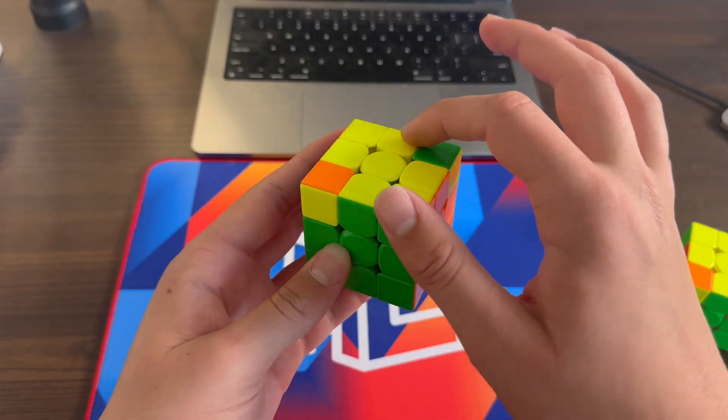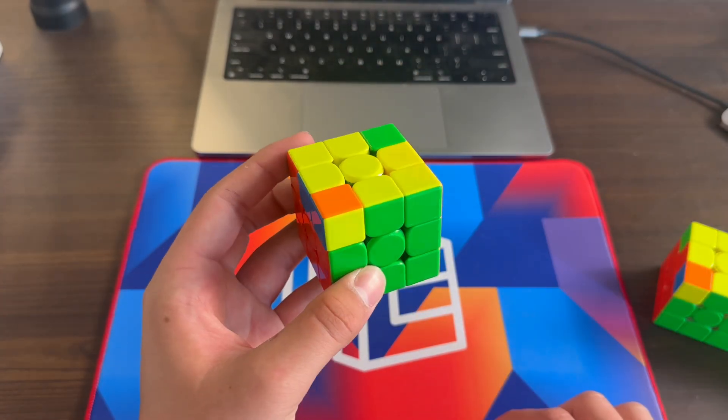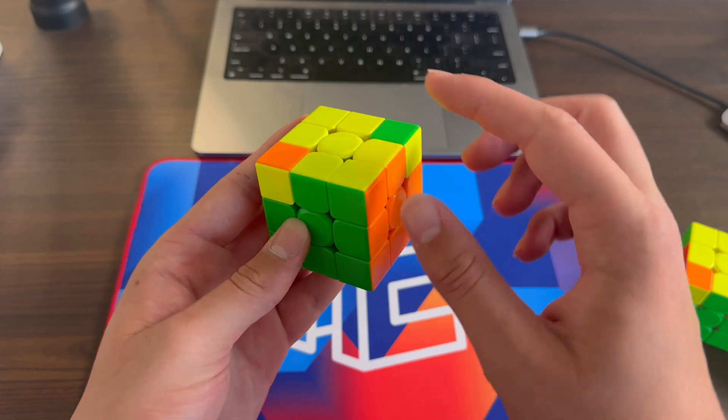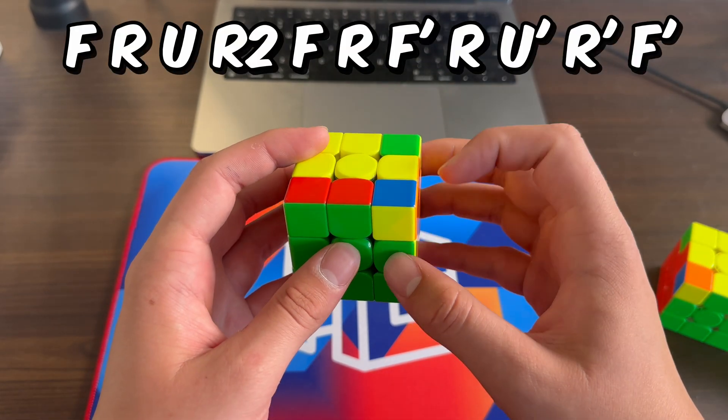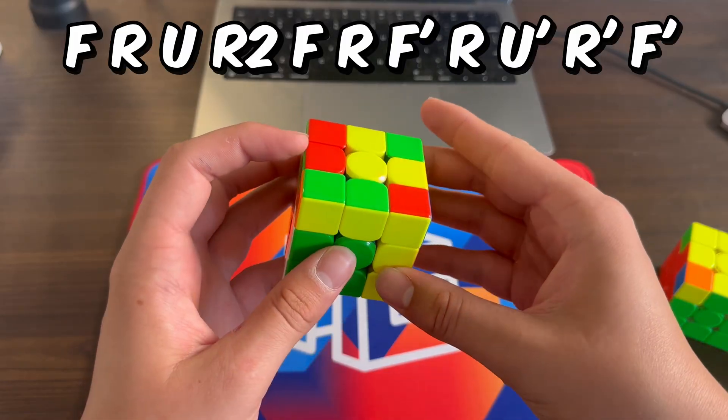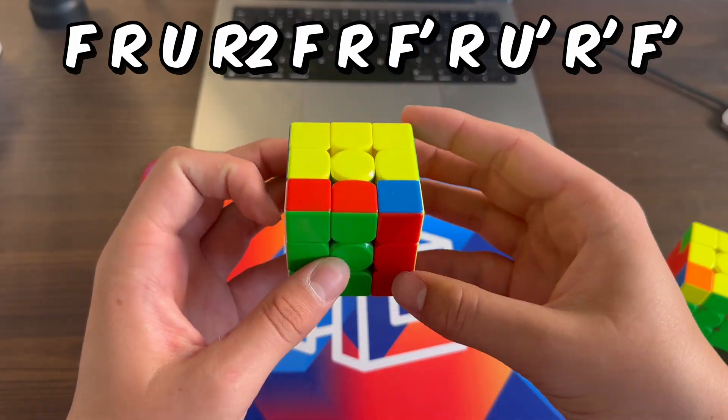For the third case, these two are matching and these two are also matching. You might get it confused with the other case but just make sure you check that both of them are matching. And when you see that, the algorithm goes like this. You're going to do F, take out this block, sledgehammer, insert the block, F' and that solves the ZBLL.